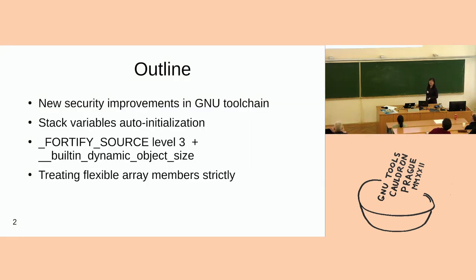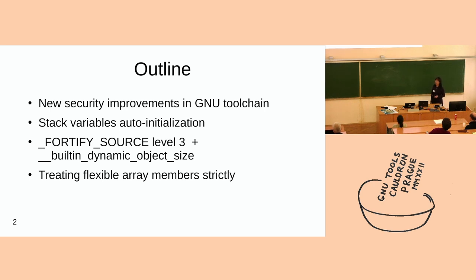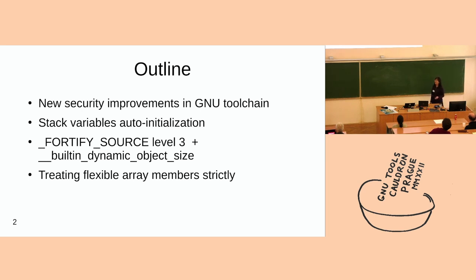This is the outline of today's talk. I will first give a list of most of the new security improvements in the latest GNU GCC and GLIBC, and then we will focus on four of them: static variable auto-initialization, Fortify Source level 3, and built-in dynamic object size — those are already in GCC 12. The last one is a new project I'm currently working on, which will hopefully be in GCC 13.